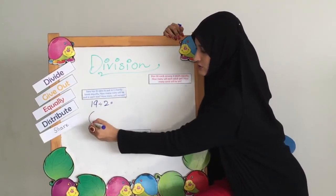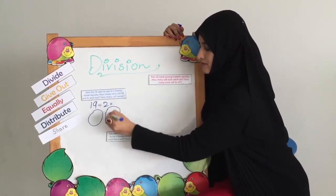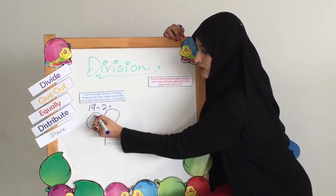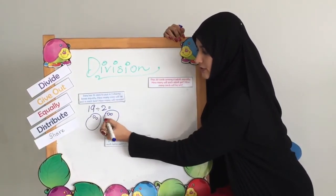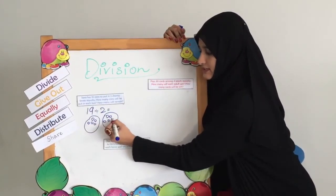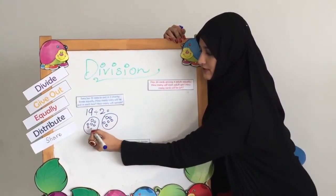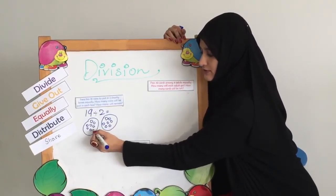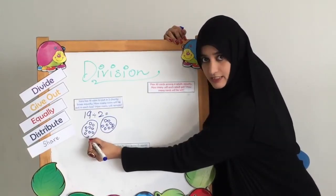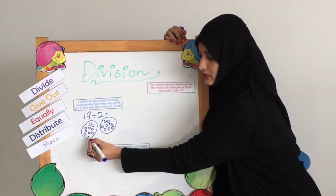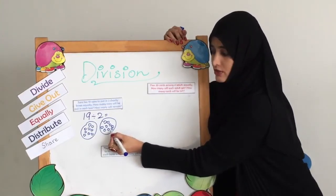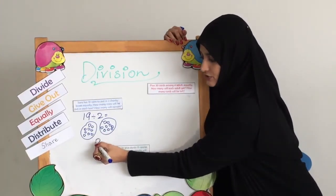So we draw the 2 charity boxes here. Now we are going to distribute the number 19 equally. 1, 2, 3, 4, 5, 6, 7, 8, 9, 10, 11, 12, 13, 14, 15, 16, 17, 18. If I give the 19th coin here, it's going to be unequal because we don't have another coin for this box. So the 19th coin is going to be here as the remainder.